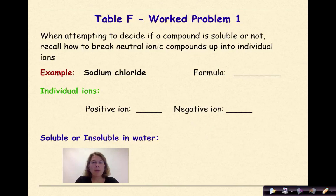Let's go through and look at some examples. When attempting to decide if a compound is soluble or not, in other words, will it dissolve, recall how to break neutral ionic compounds up into individual ions. So, let's start with something pretty easy. Example here is sodium chloride. So, if I look at sodium chloride, I know the positive ion is going to be Na+1, and my negative ion is going to be Cl-1. And because the +1 and the -1 cancel each other out, my formula here is going to be NaCl. So, the question is, is this soluble or insoluble?